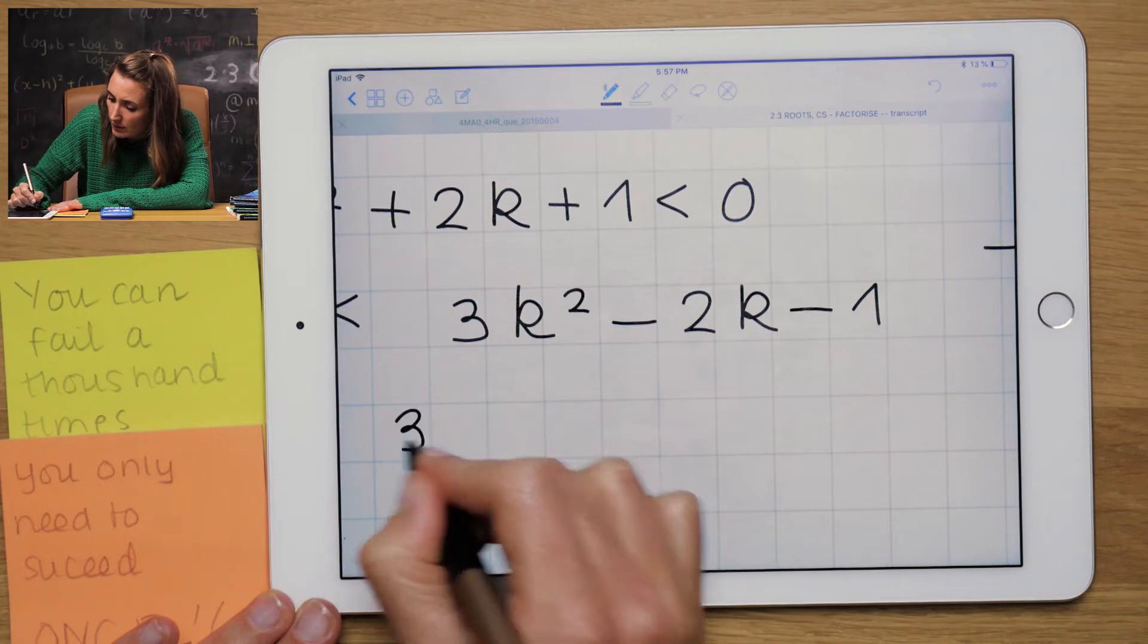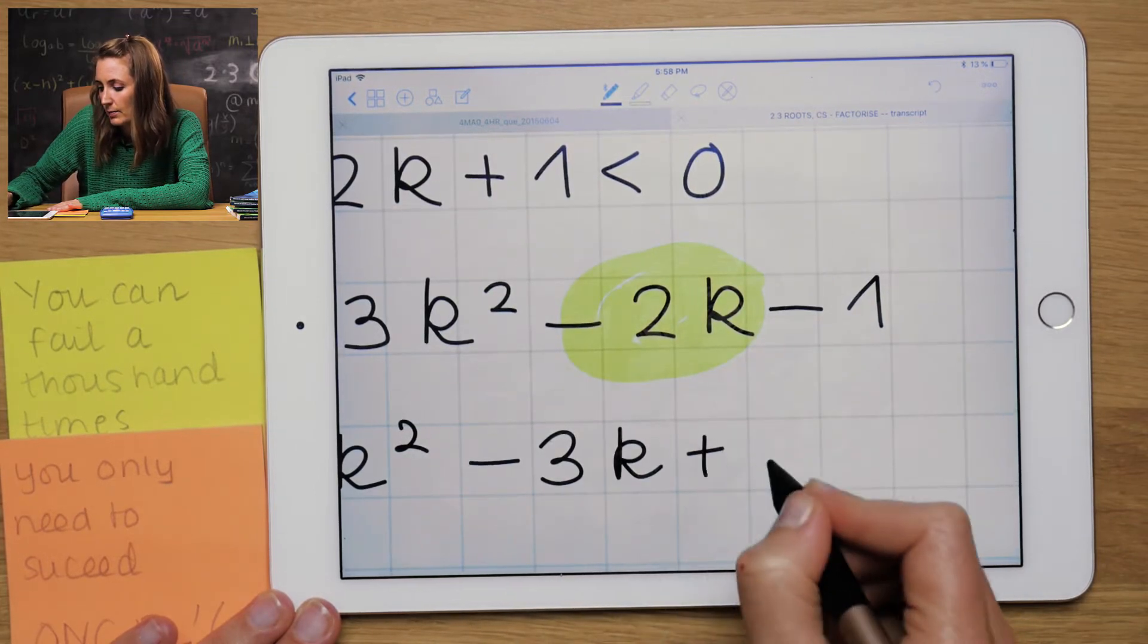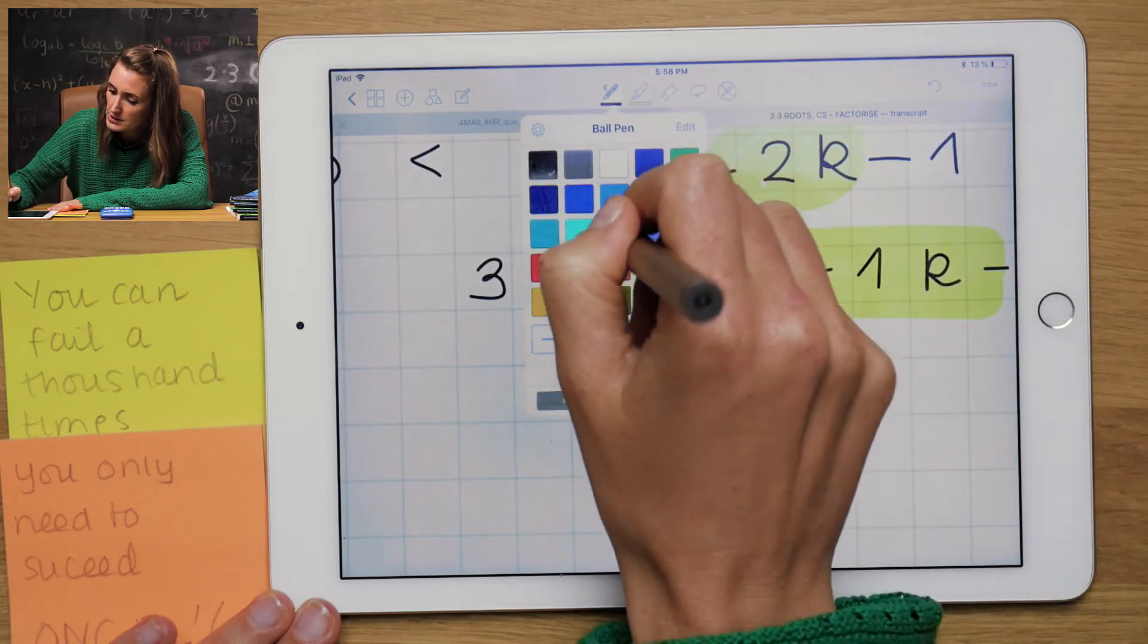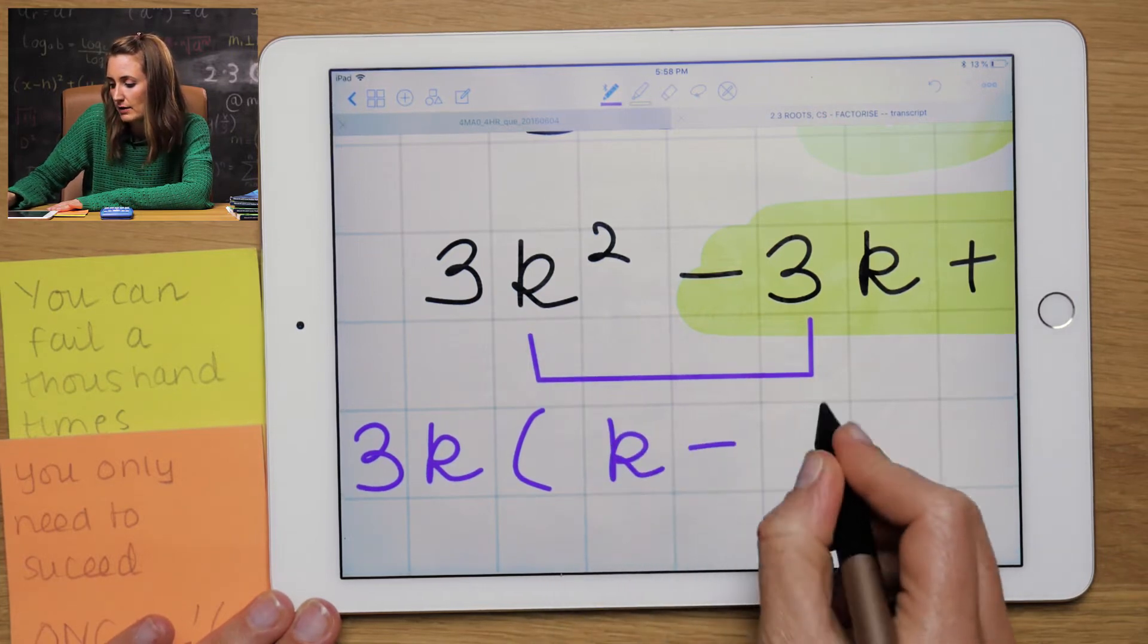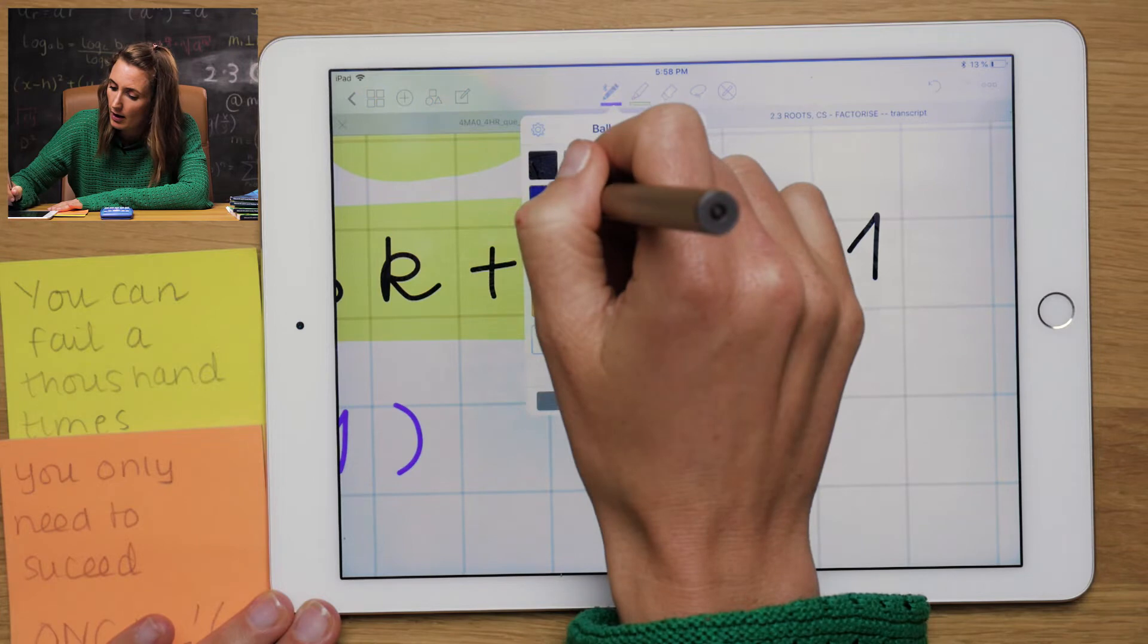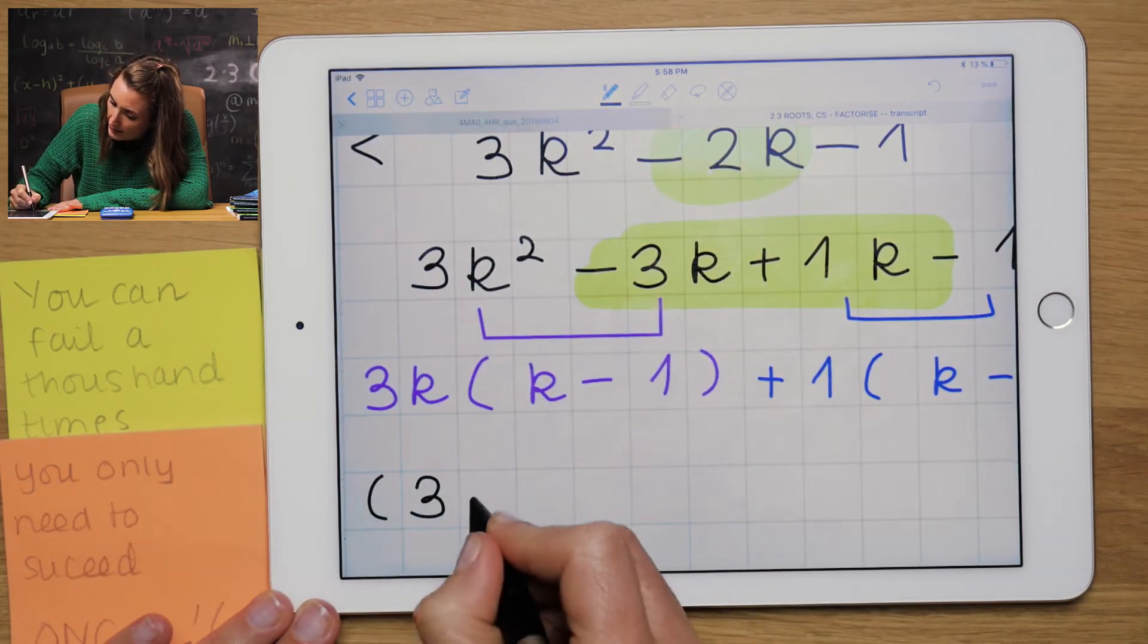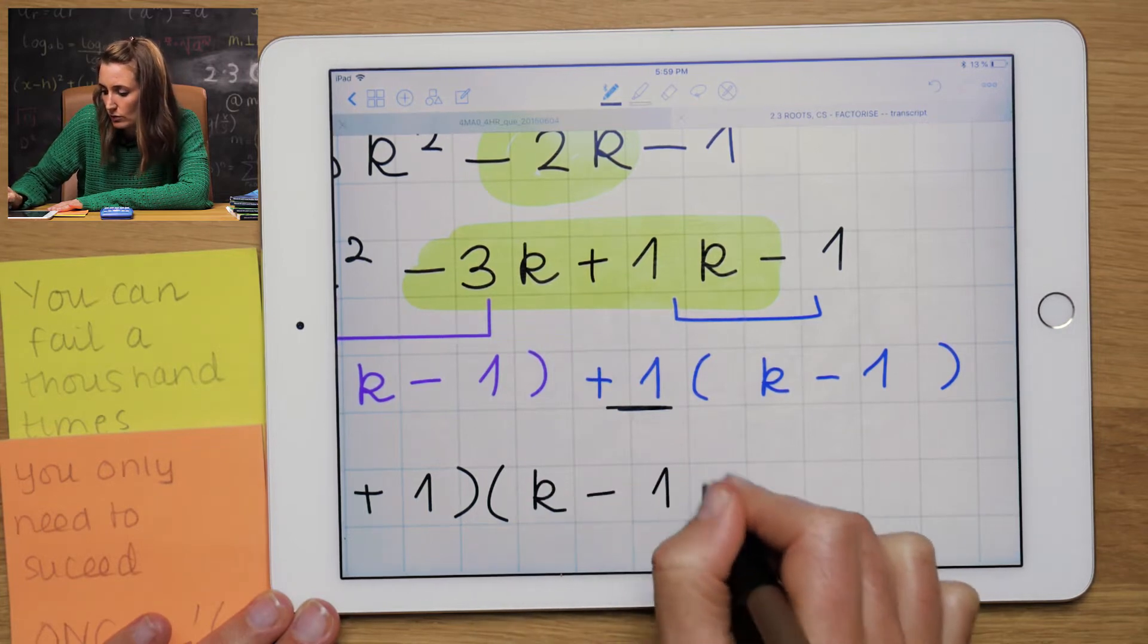So we're going to break down the minus 2k here into minus 3k and plus 1k. So now you're going to factorize the first two. And I'm going to take out 3k. It's going to leave me k minus 1. Here, I don't need to take out anything. I'm just going to put a 1 outside k minus 1. You always want these guys to match. So my two brackets are going to be 3k plus 1 and k minus 1.